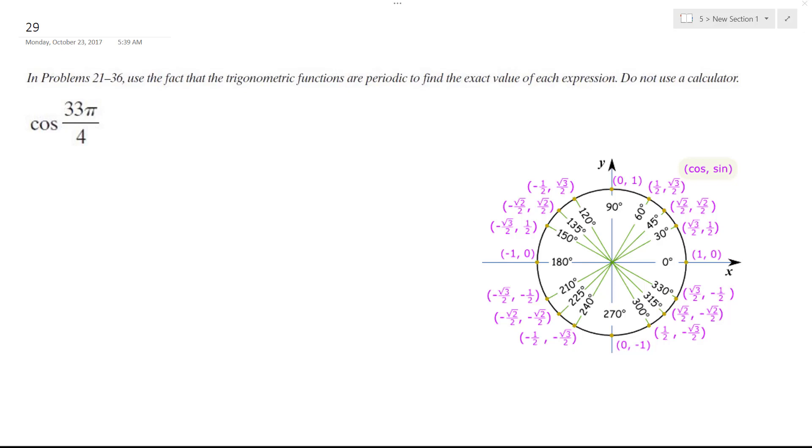So I got the cosine of 33π over 4. This is coterminal, so I need to break this down.